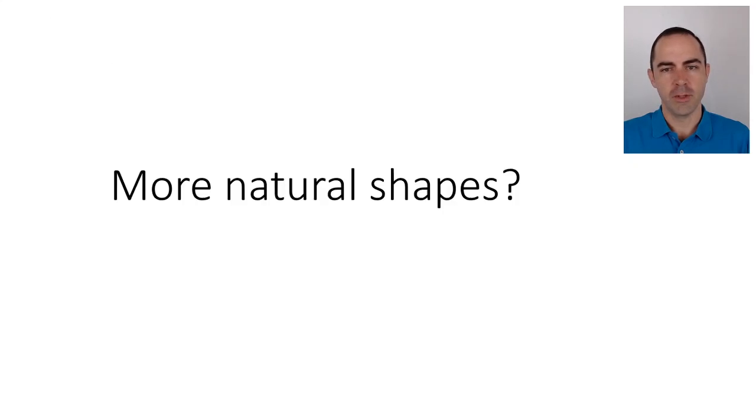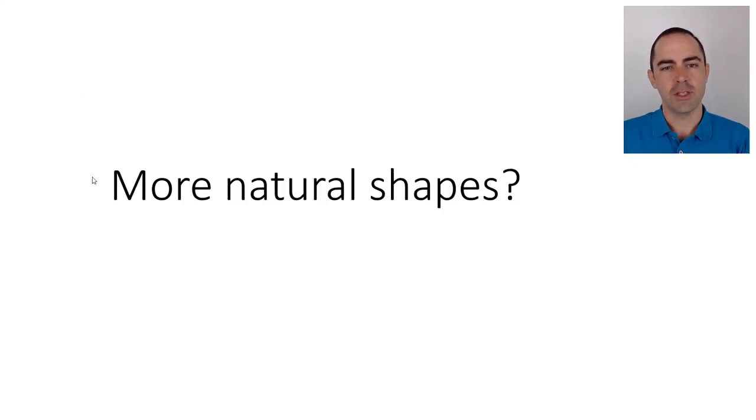Then the next question is: can we track objects with more natural shapes without trying to assign these geometric primitives?